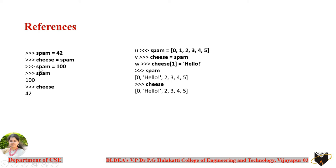Cheese also contains 42 and spam contains 42 — the content of spam has been copied to cheese. Next, we change spam's value to 100. When we print both variables, spam gives 100 because the new value replaces the old one, and cheese still gives 42, which was the original copied value.